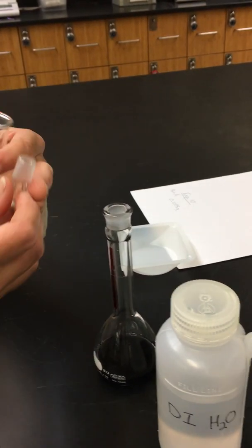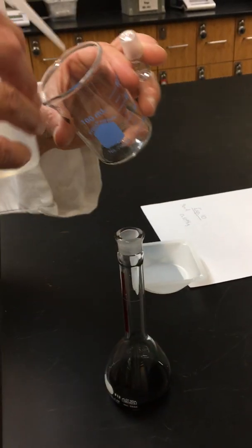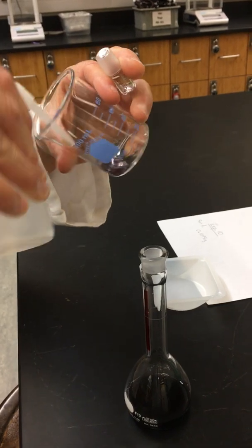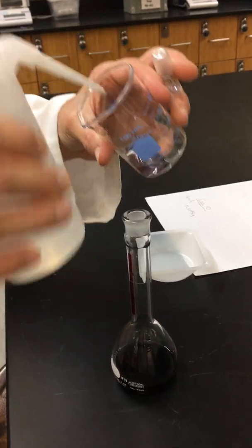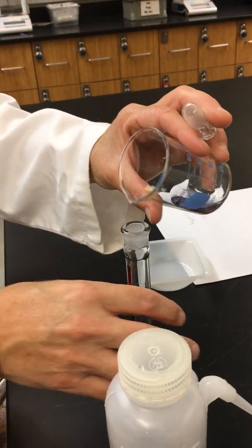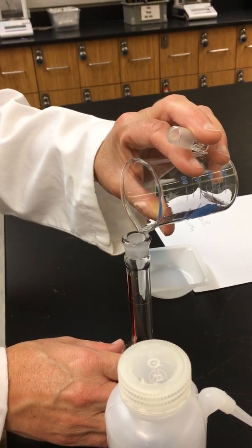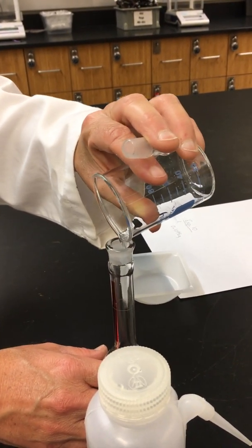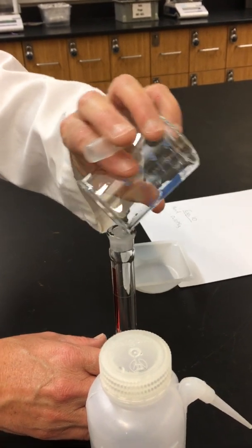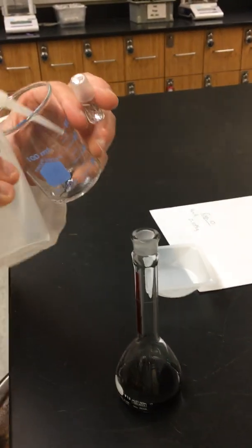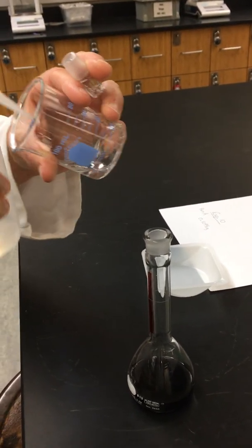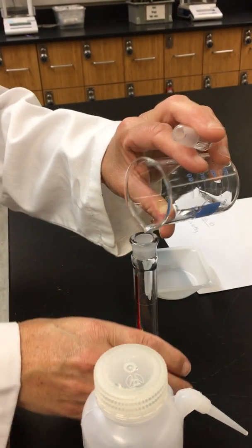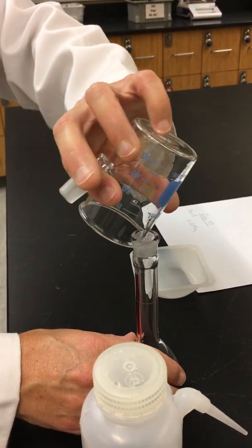And now to make sure that we've transferred all of it, we're going to rinse out our beaker. This is why we're always making sure we use less volume than the total volume that we want to dilute it to. Do one more rinse just to make sure.